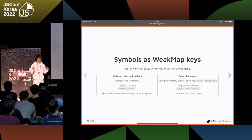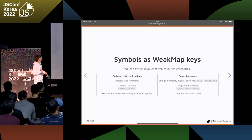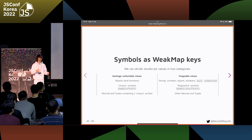Forgeable values are values that you can recreate. If you have a string that contains some contents and then stop referencing it, in theory the engine could garbage collect it. But then you can create the same string again — even outside of your program, you could fetch it from a server or create it from component numbers. So you could create the same string again, and you could observe using Maps or WeakMaps that the original value has been deleted.